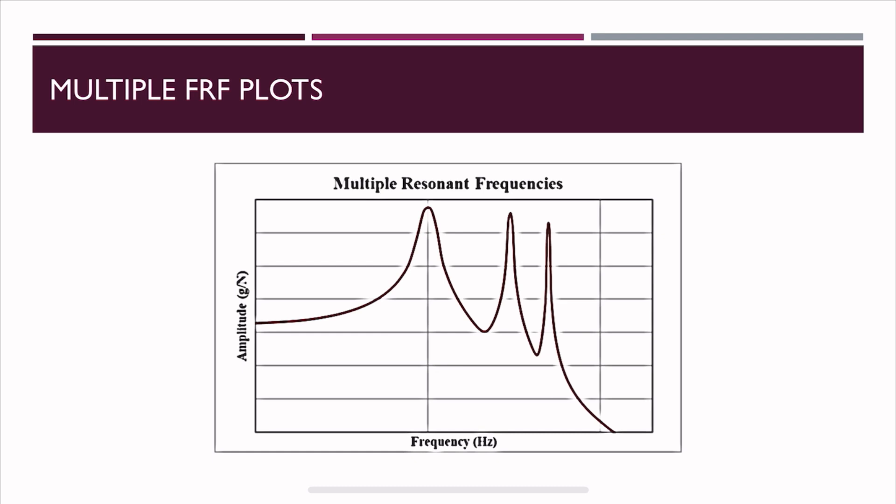A general structure will have multiple natural frequencies. Sometimes the second or third natural frequency may be an integral multiple of the first, in which case there are harmonics. More information about harmonics is available in the description link.